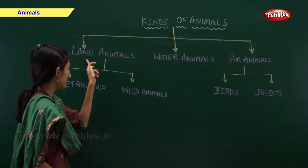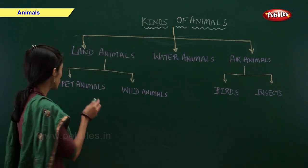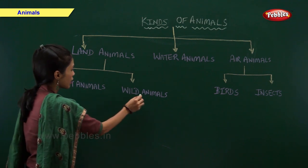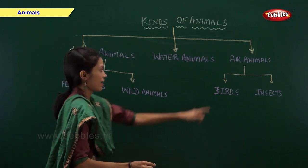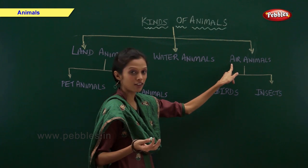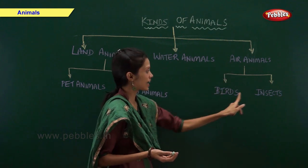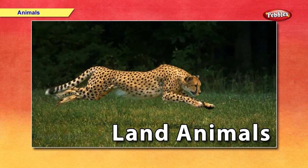Land animals are further divided into pet animals and wild animals. Air animals are further divided into birds and insects. Now let us have a look at land animals. The animals which live on land are land animals. Land animals can be further divided into pet animals and wild animals.